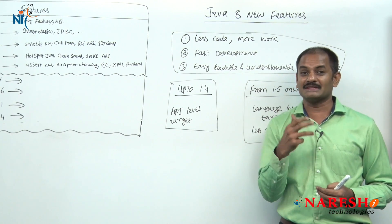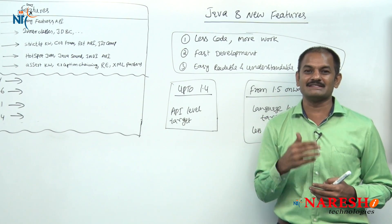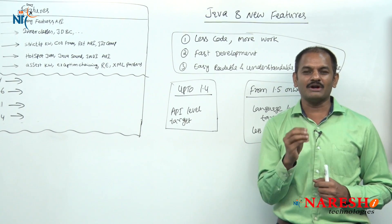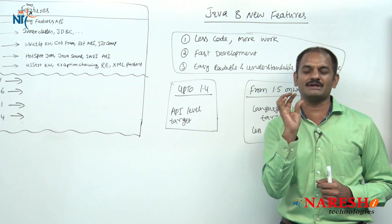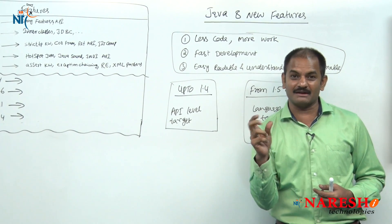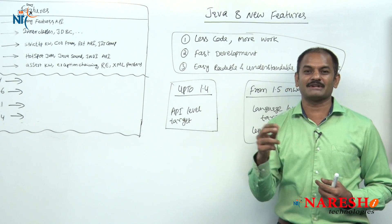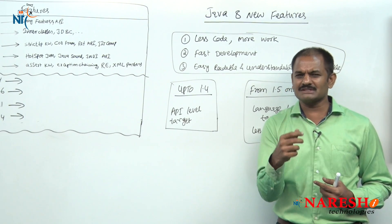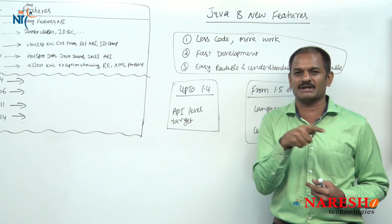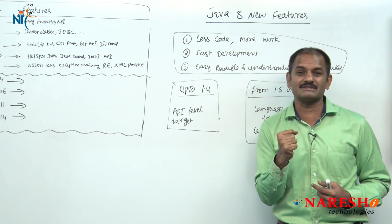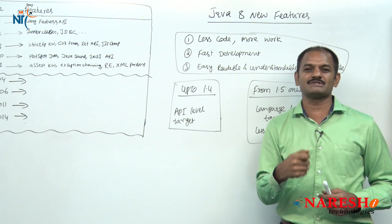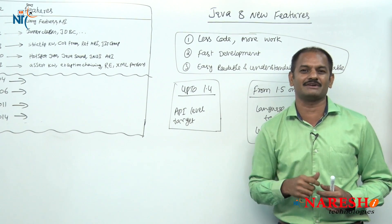Every programmer was writing those three lines of code — that has been eliminated in Java 5 by adding a new feature. And if you take wrapper classes: if I want to represent an integer value as an object, everyone had to write Integer IO = new Integer(10); double D01 = new Double(10.5). This wrapping logic code was common for everyone. Sun eliminated this code writing by using the concept called autoboxing and auto-unboxing in Java 5.